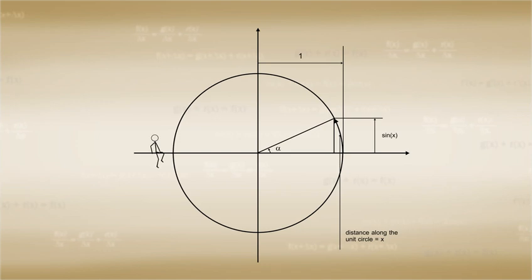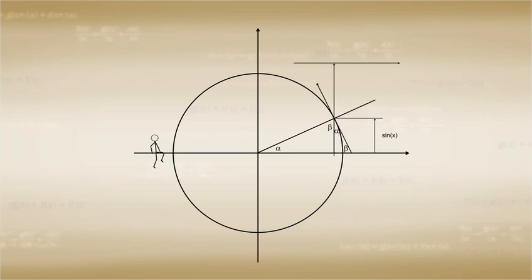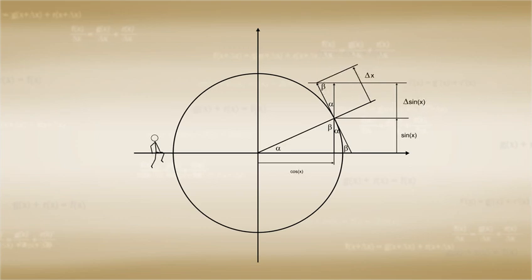In order to understand how the travel along this path affects the function f of x, which is sine of x, let us observe the diagram with an exaggerated change in x along with its vertical and horizontal components. Note that in cases where delta x is really small, it can be represented by a line tangential to the unit circle at the current position of x along the unit circle.